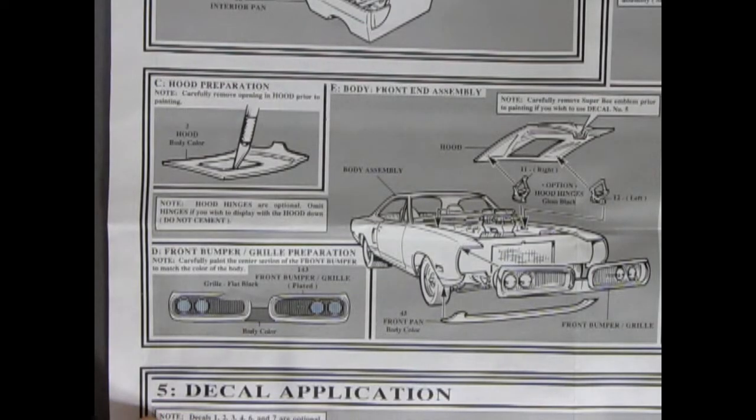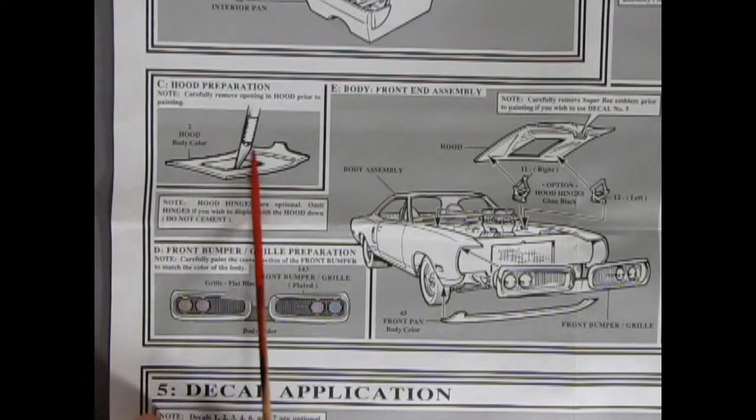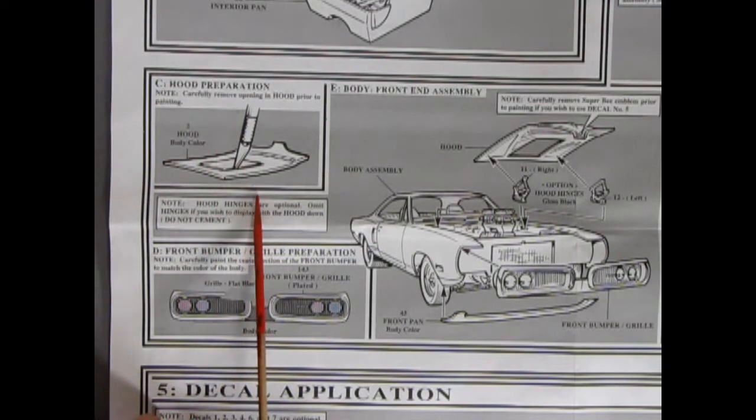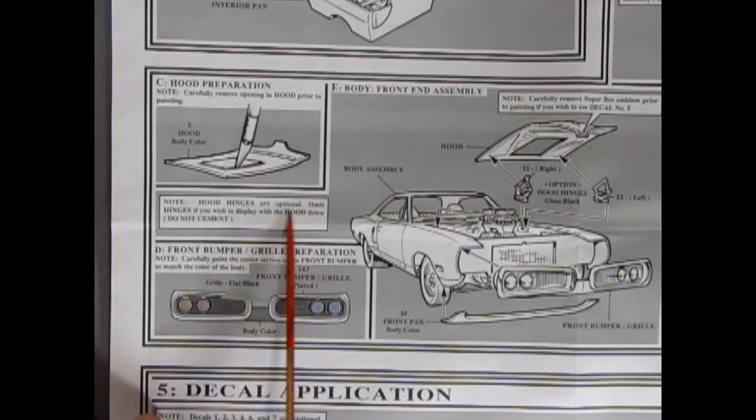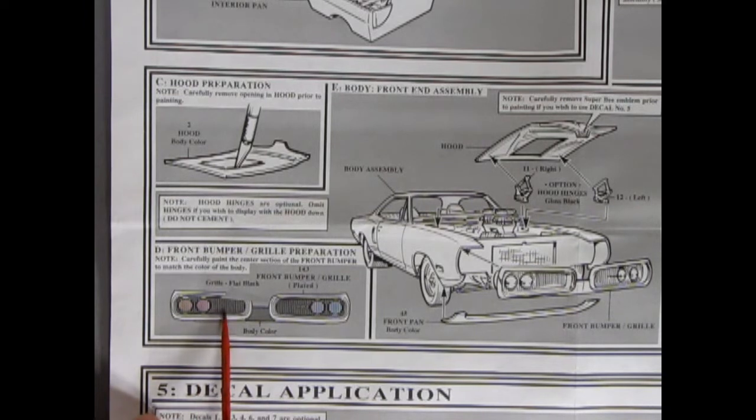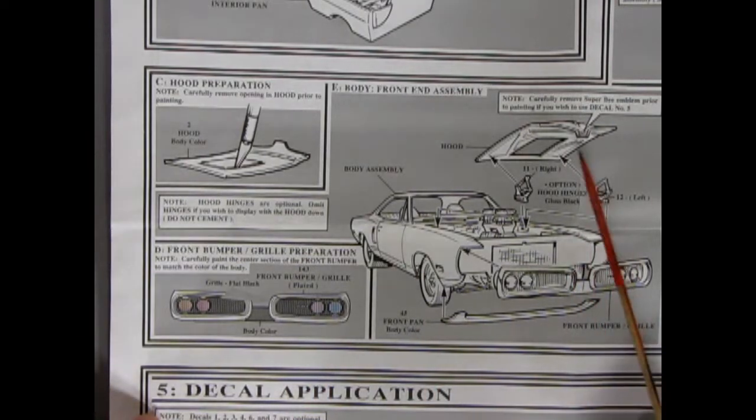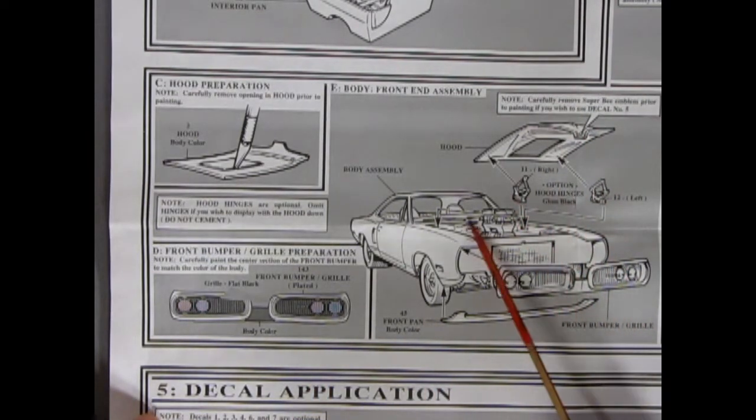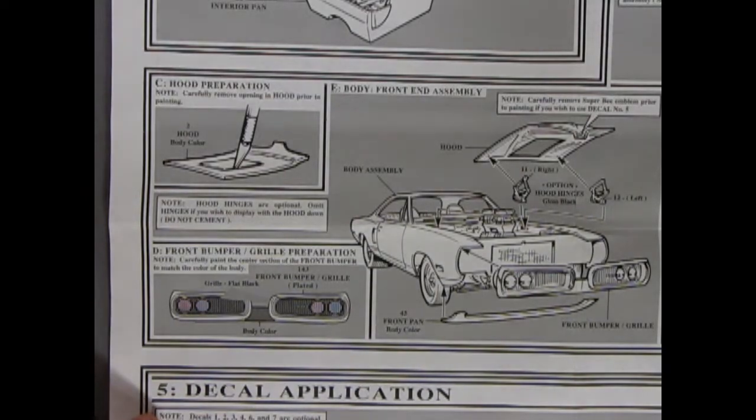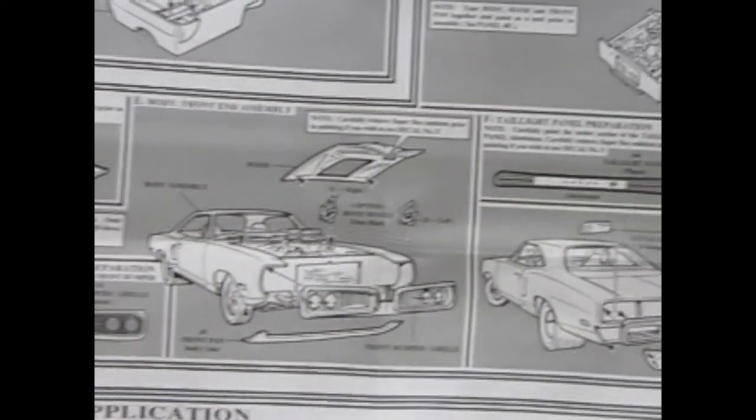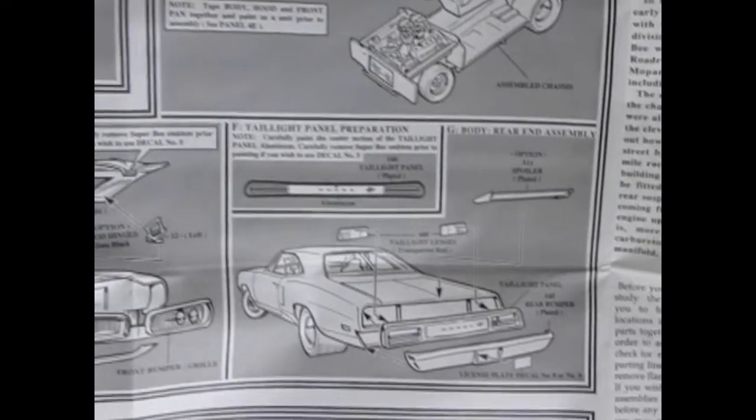And next up we're going to do the slide as we go across the next two panels. So here we go with our hood preparation. And you'll want to chop open that big hole to allow that big blower to pop through with your carburetors. Note hood hinges are optional. Omit hinges if you wish to display with the hood down. Do not omit. There's our front grille and bumper. And you're going to paint the center here body color. But you're going to add in some nice black wash in here to bring it all up. And then there's our hood going in. Your optional hood hinges to keep that hood up. There's your front grille and bumper pops in the front and the pan goes underneath. And now let's do the slide. The slide. Do the slide.